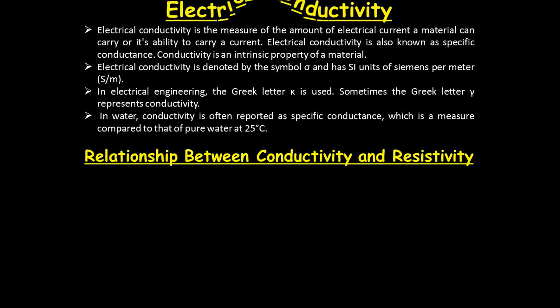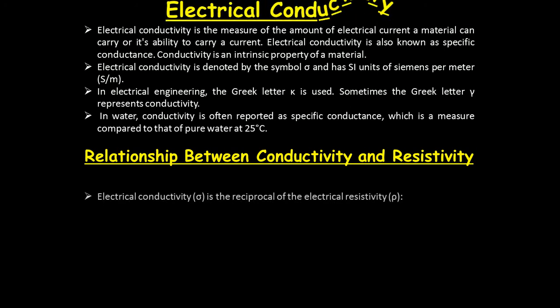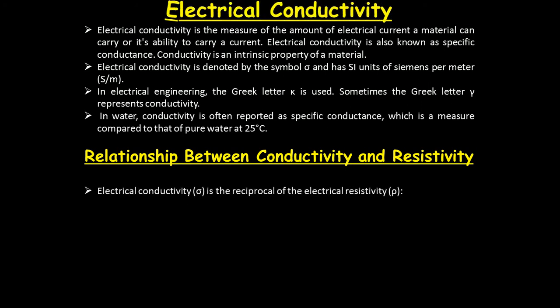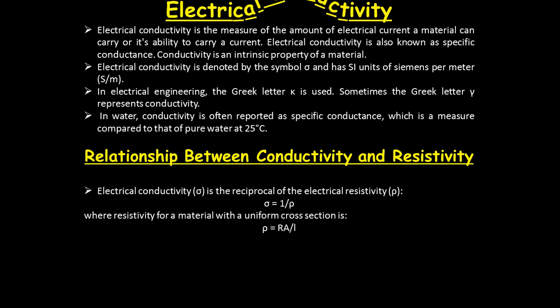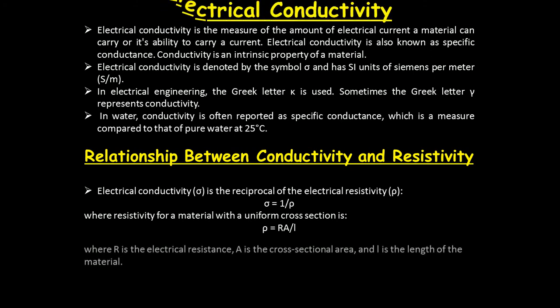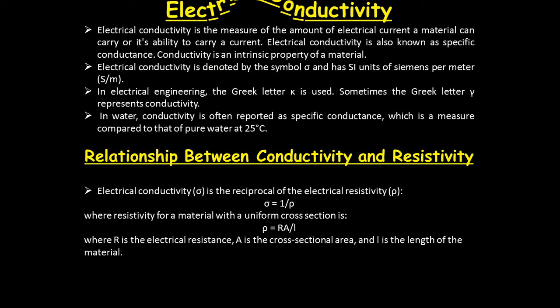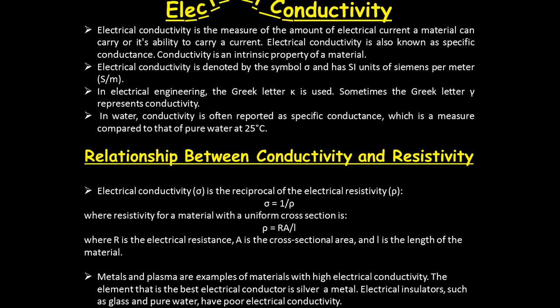Next, the relation between conductivity and resistivity. Conductivity is the reciprocal of electrical resistivity. The resistivity of a material with uniform cross-sectional area is ρ = RA/L, where R is the electrical resistance, A is the cross-sectional area, and L is the length of the material.